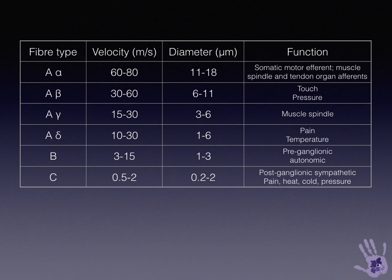A mixed peripheral nerve contains a number of different fibres with different functions, different oxygen demands, and different speeds of conduction. The large fibres, which conduct very quickly, are responsible for somatic motor efferent function, tendon organ and spindle responses, and some touch and proprioception. These require significant amounts of energy, and in order to reduce the energy demand, Schwann cells invest the axon creating nodes of Ranvier, where voltage-gated channels are clustered, reducing the total ATP expended per action potential.